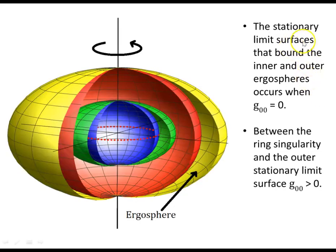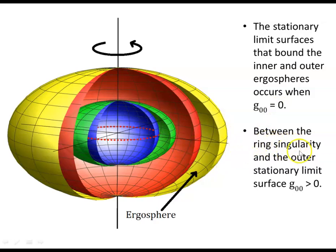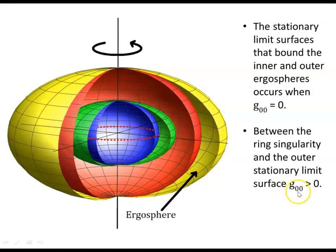The stationary limit surfaces that bound the inner and outer ergospheres occur when the time component of the metric is set to zero. Solving for that gives the outer and inner stationary limit surfaces. Between the ring singularity and the outer stationary limit surface, we find that the time component of the metric is positive, not negative.